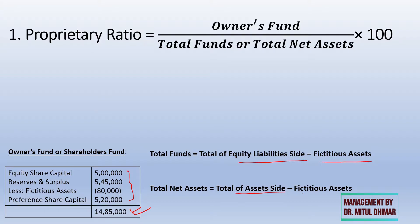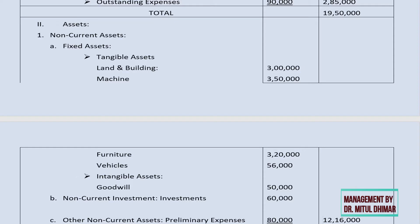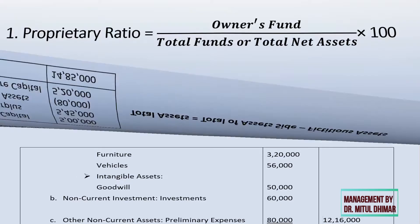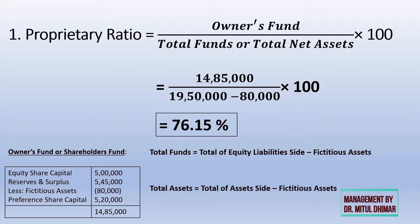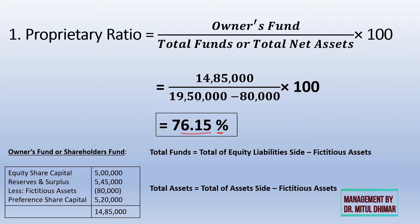Since the total of the asset side equals the equity and liability side, we can take the total of the asset side and deduct fictitious assets. Here in the balance sheet, the total is 19,50,000 less 80,000 of preliminary expenses. So in the formula: 14,85,000 divided by (19,50,000 less 80,000) multiplied by 100, giving an answer of 76.15%. This means out of every 100 rupees of total fund, around 76 rupees is owner's capital.